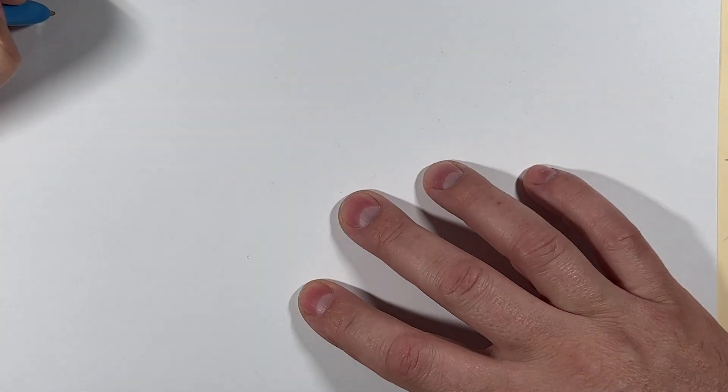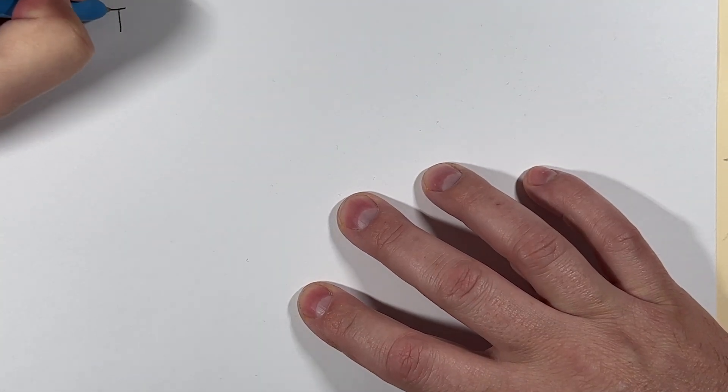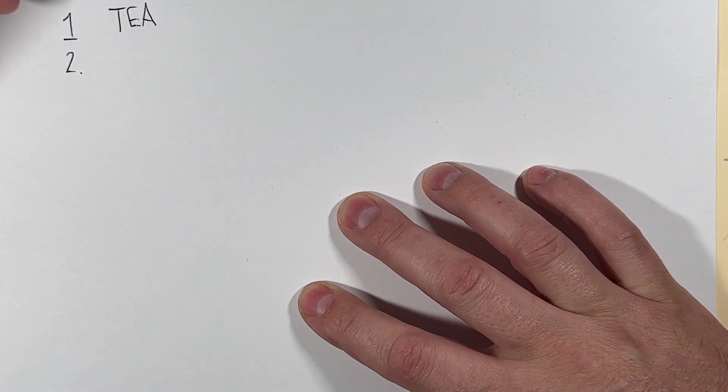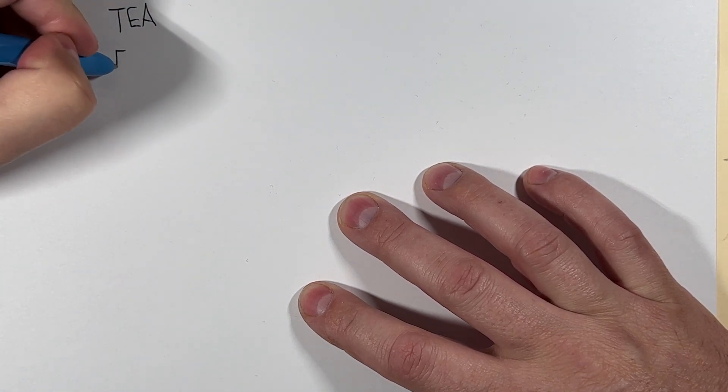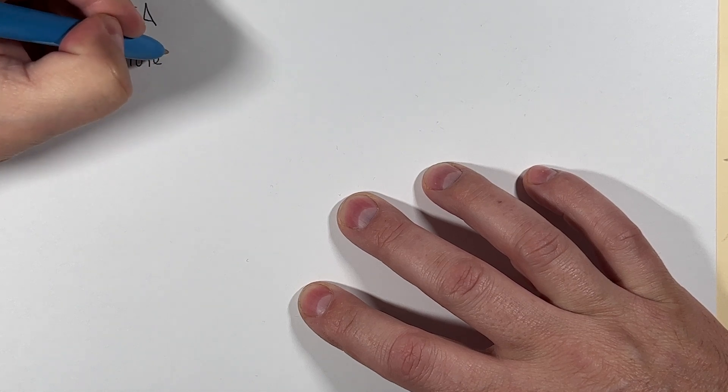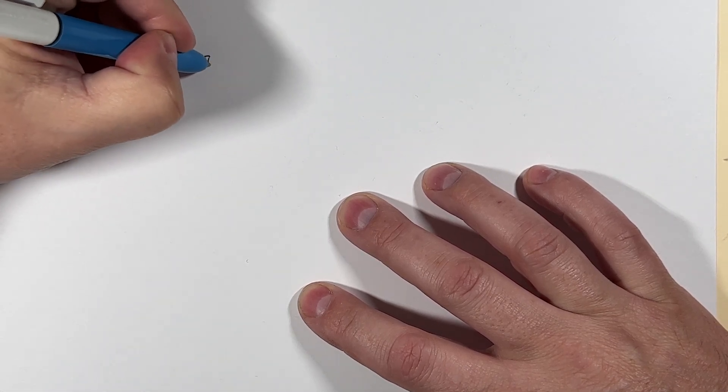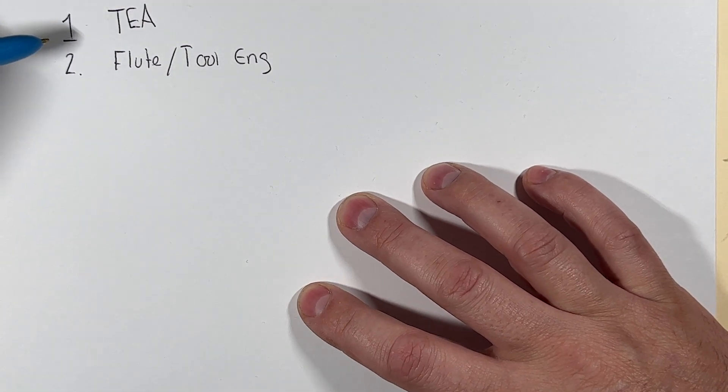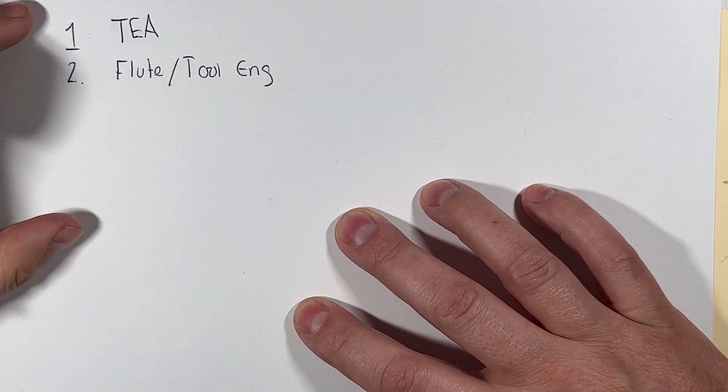We're going to talk about two fundamental components to tool engagement. One, we're going to talk about the tool engagement angle, so we'll call it TEA. And two, we're just going to, for lack of a better term, we'll just call it flute or tool engagement. And this is total engagement.